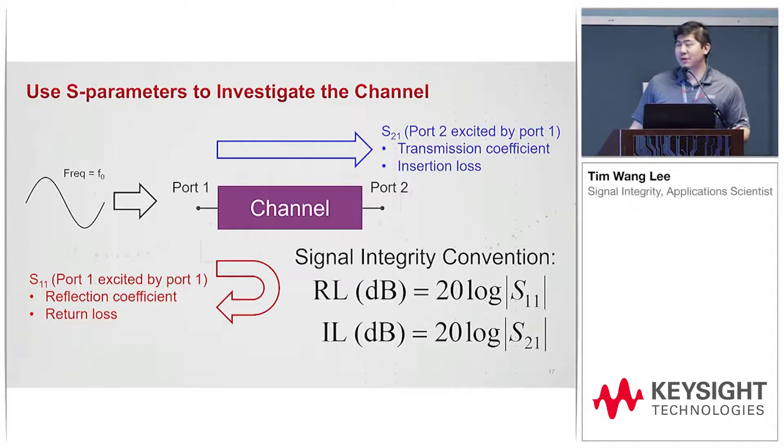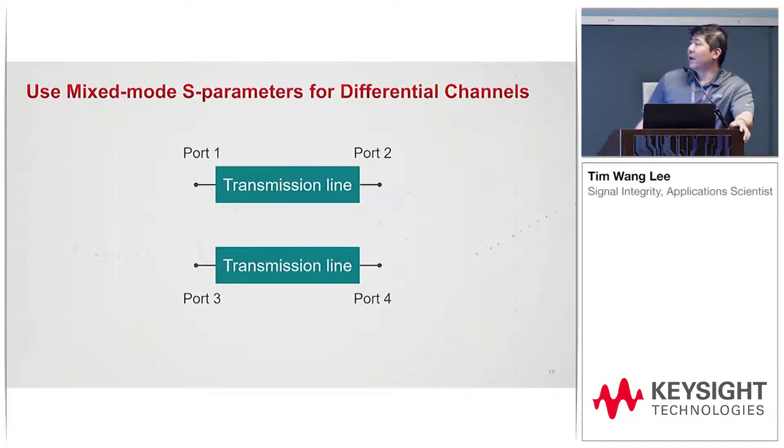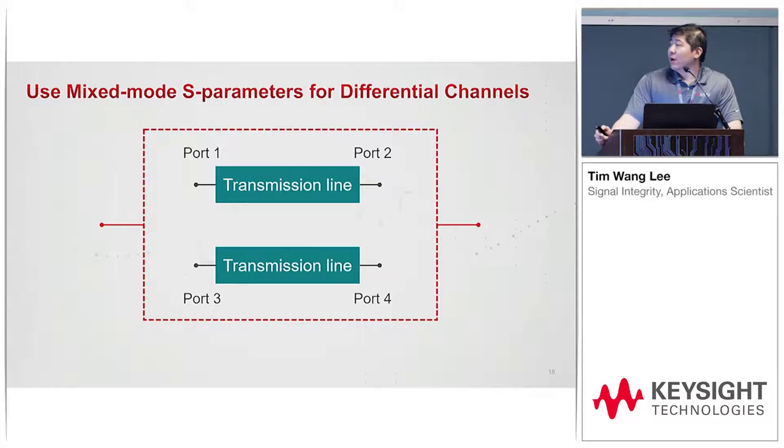Likewise, IL can be quoted as a positive or mostly negative number. Now we have a differential channel. To minimize noise, you pair two transmission lines together. That makes a differential pair, and we'll look at differential port one to port two.